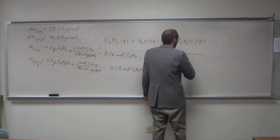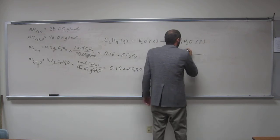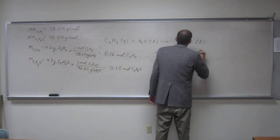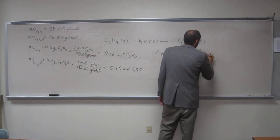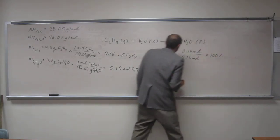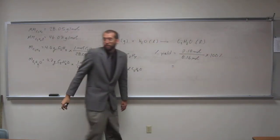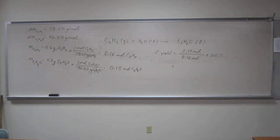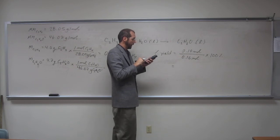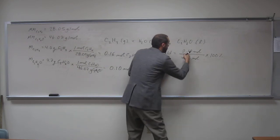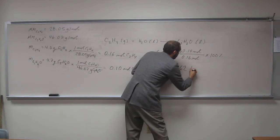The yield that we got, which was 0.10 moles, divided by the yield that we should have gotten, times 100%. I'm just using the numbers that are still in my calculator. If you just put 0.1 and 0.16, you might get a slight difference. But, to two sig figs, I got 62%.